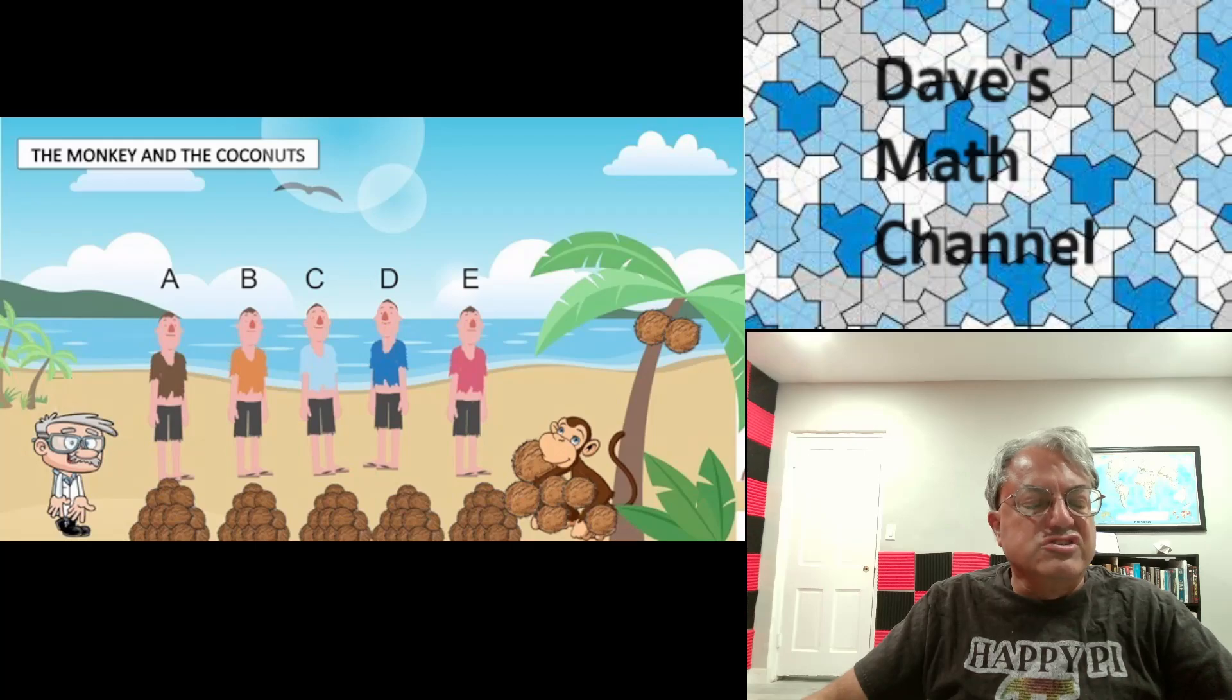And then the first sailor gets A coconuts in the night. That's his share, leaves one for the monkey. And then the next sailor takes B, leaves another one for the monkey. The third sailor takes C coconuts, leaves one for the monkey.